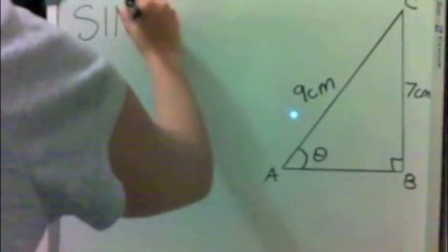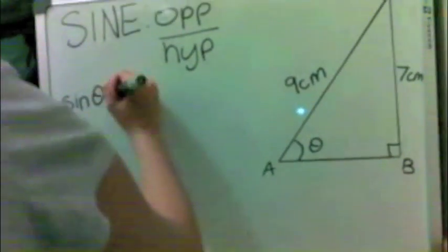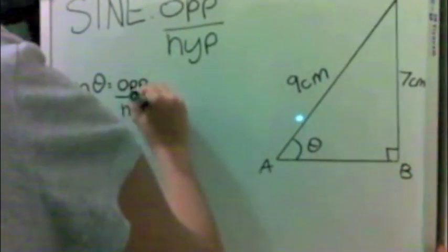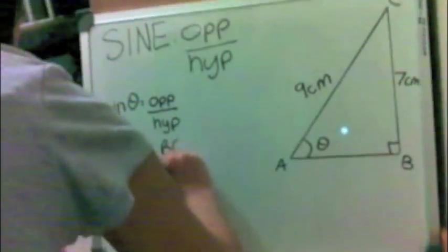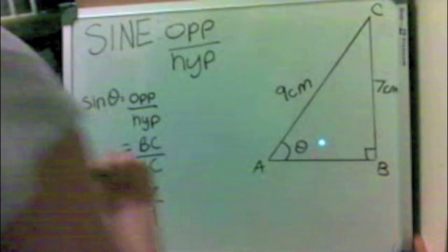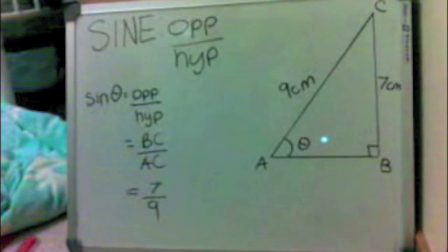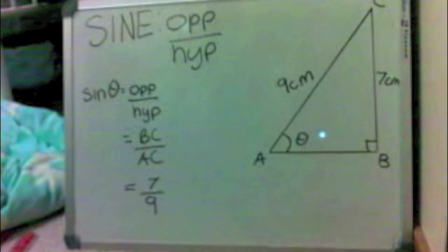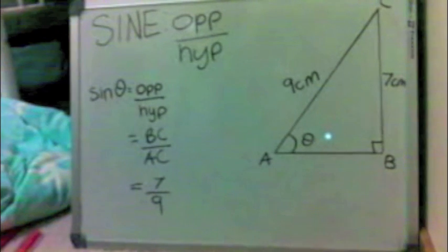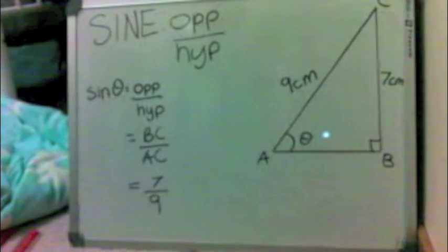We will start with the sine ratio. To use this ratio, we need two things: the opposite side to the angle and the hypotenuse. In this example, we have an unknown angle theta, and we can see that AC is 9cm and BC is 5cm. We see that the hypotenuse has been provided and BC is opposite theta. Since we have the two vital things needed for the sine ratio, we solve using sine.